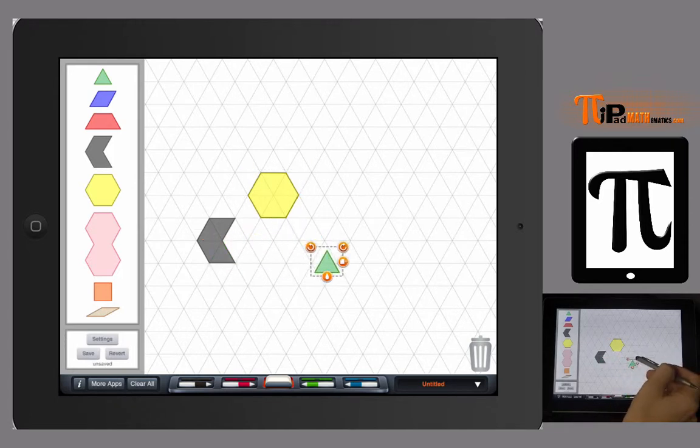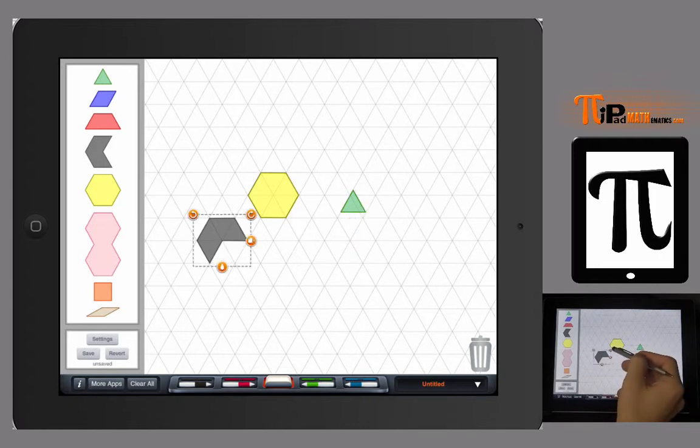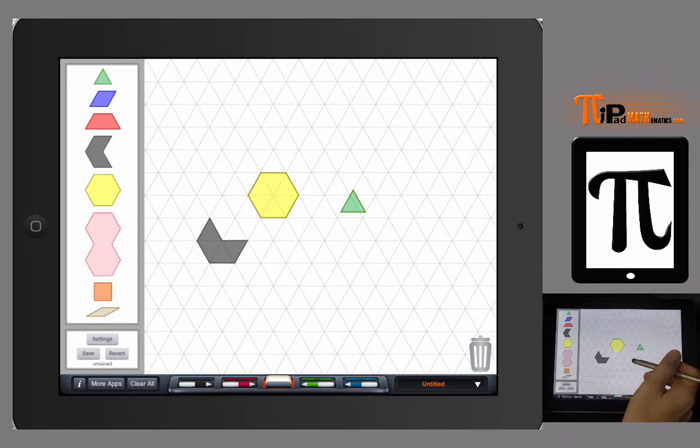Here the triangle rotates and does a 180-degree rotation. This shape rotates along that hexagonal pattern—it rotates one triangle over. It's really neat to talk about transformations and things like that with young students in this app.